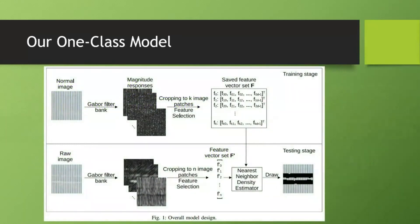Our system has two stages. In the training stage, the input is normal fabric — fabric without defects. Going through our Gabor filter bank, we get different responses from it. After the Gabor filter bank, we get magnitude responses. Then we crop the responses into patches for feature selection by our autoencoder. The features are saved for later use.